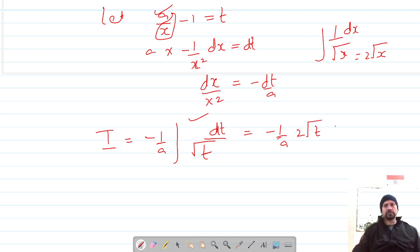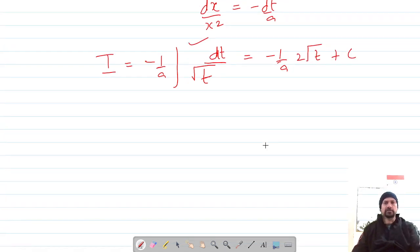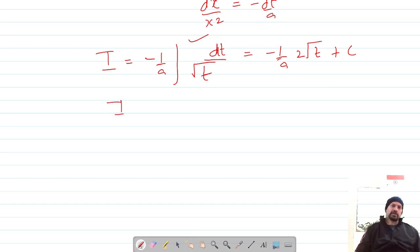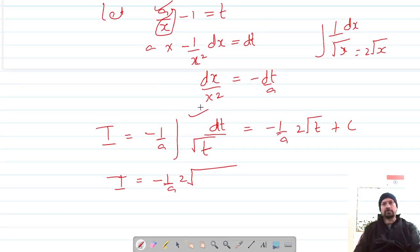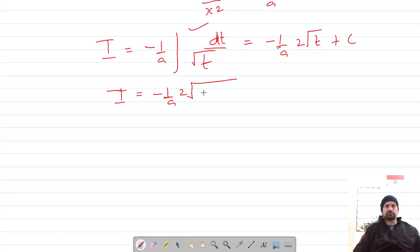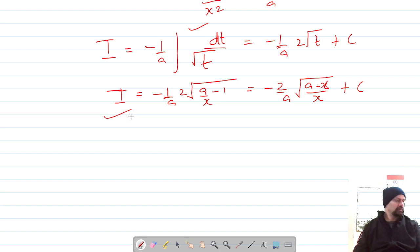Now finally I can replace the values of t, substitute the value of t. And t was a over x minus 1, so this is a over x minus 1. This becomes minus 2 over a times the square root of a minus x over x plus c. This is our answer for question number 3.